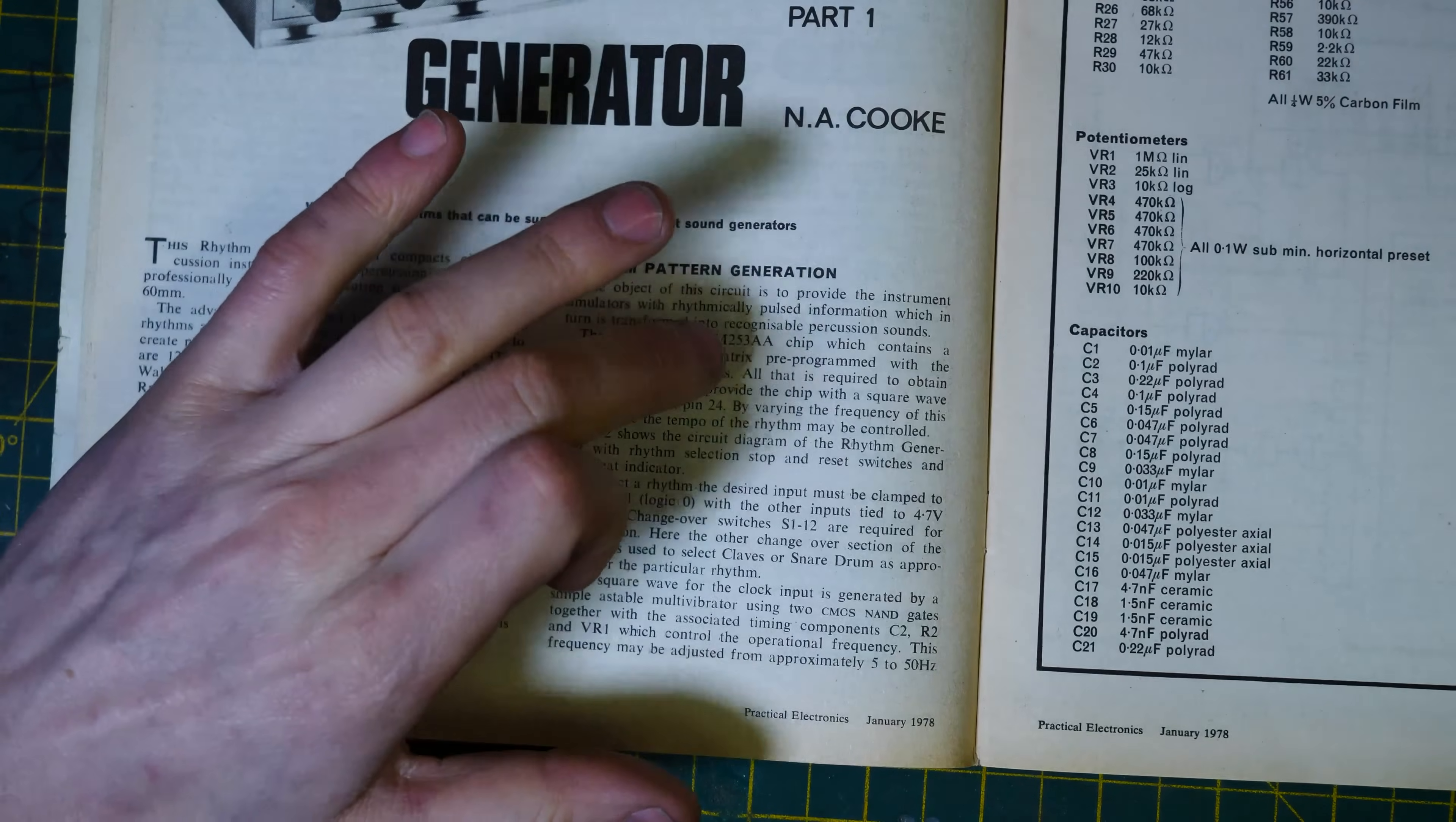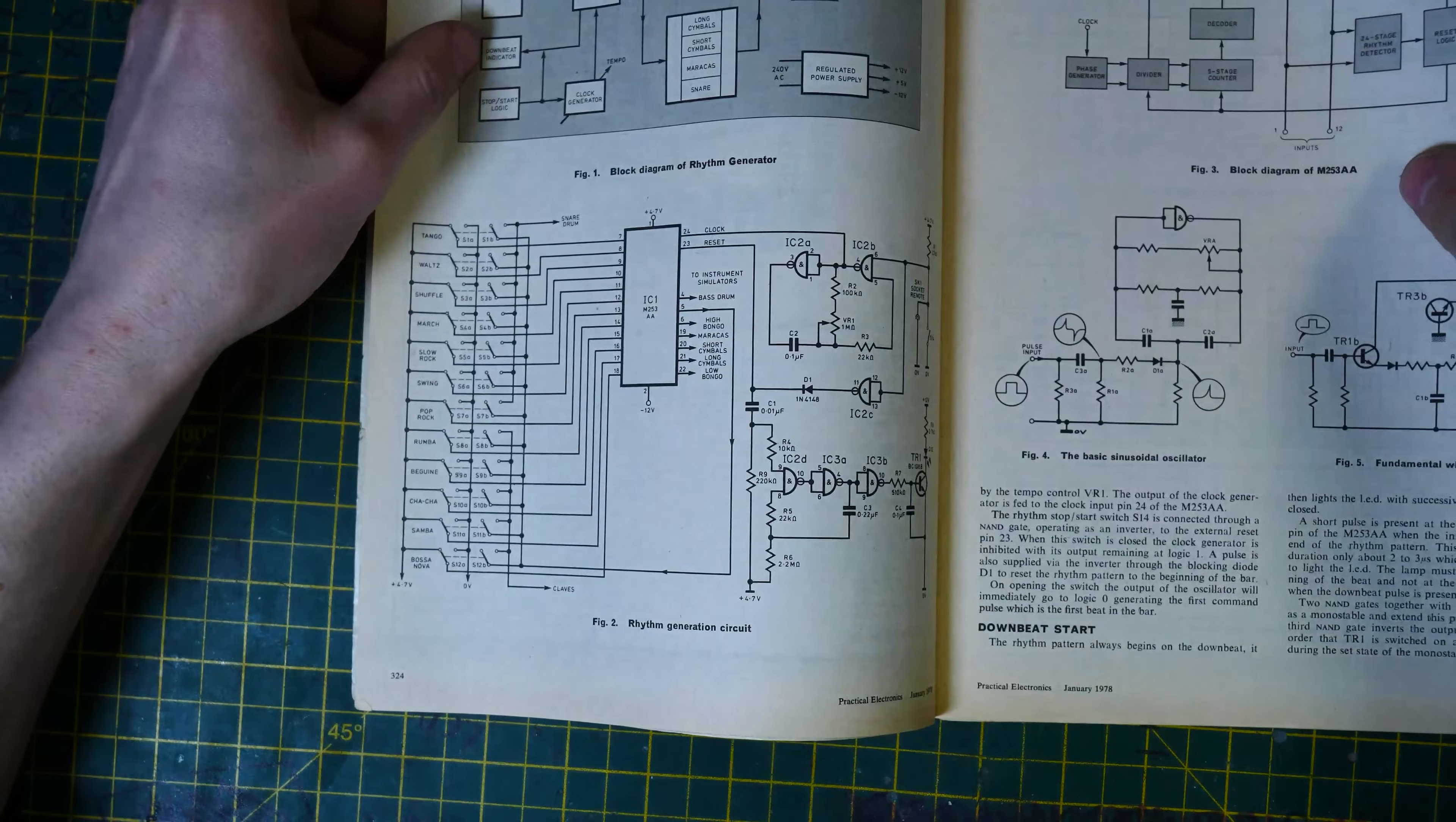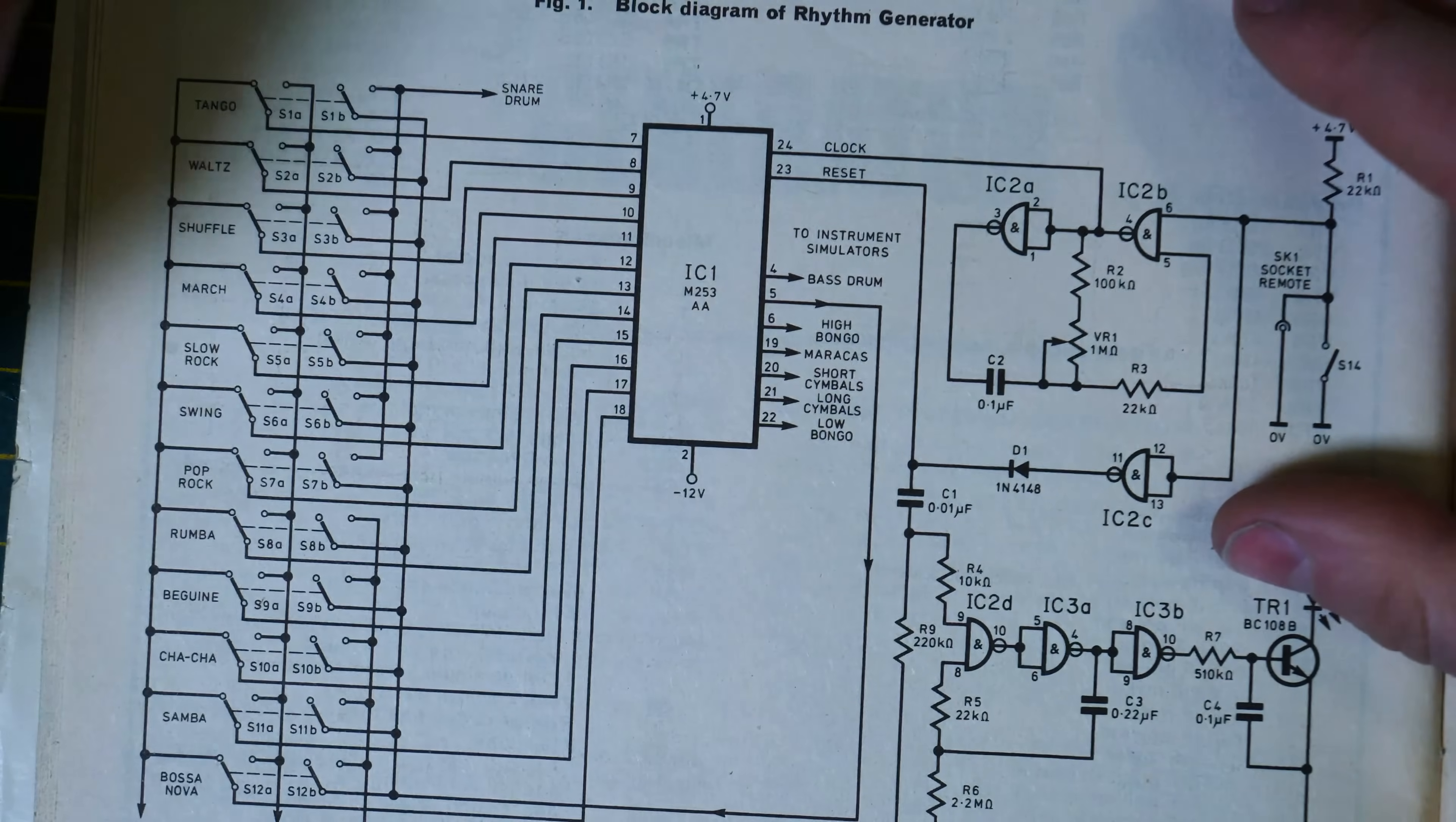This is interesting because it's a very similar premise to the CR78 and the CR68. So this chip uses an M253AA. Frederick, a patron, sent me some information on this chip. And what this chip is, is it's basically a preset chip that you send in. Well, I'll show you the image of the breakdown of the sequencer section.